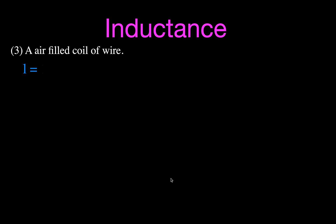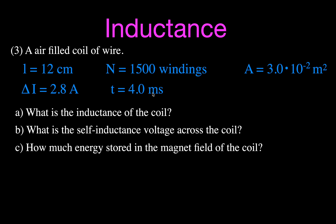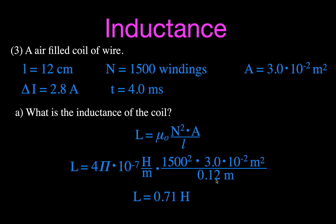Example three: an air-filled coil of wire has a length of 12 centimeters, 1,500 windings, and a cross-sectional area of 3.0 times 10 to the minus 2 meters squared. Part A — calculate the inductance: using L equals mu-naught times N squared times A divided by length, with mu-naught equals 4 pi times 10 to the minus 7, N equals 1,500 squared, and length converted to meters, the inductance is L equals 0.71 Henry.